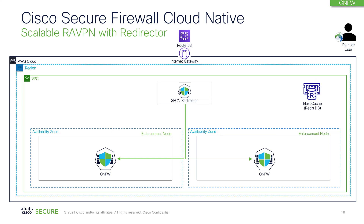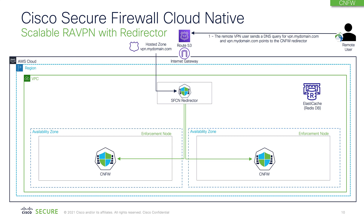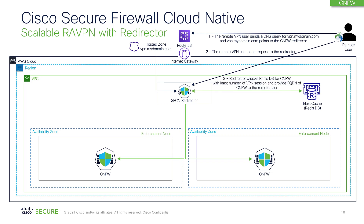Now let's look at the redirector architecture, where we load balance based on VPN sessions rather than using weighted average load balancing. In this flow, a user will send a query for VPN.mydomain.com, and in response to the VPN query we provide that user with the IP address of a redirector. The redirector has information about all the enforcement points and it also talks to ElastiCache.